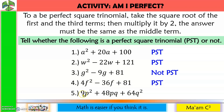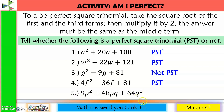Last one: the square root of 9 is 3, the square root of p squared is p, so we have 3p. The square root of 64 is 8, the square root of q squared is q, so we have 8q. 3p times 8q is 24pq, times 2 is 48pq — and that is the middle term. So this one is a PST.